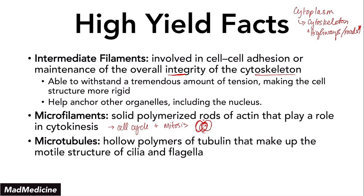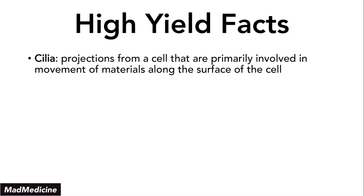And then finally, you have microtubules. Microtubules are hollow polymers of tubulin that make up the structure of cilia and flagella. Cilia and flagella are pretty important because they are found in your human body in very specific spots.